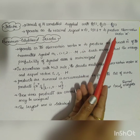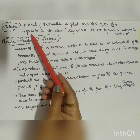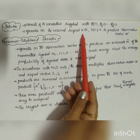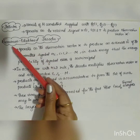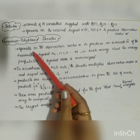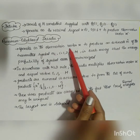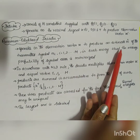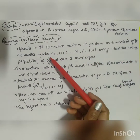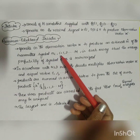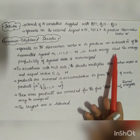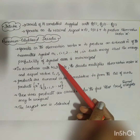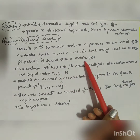The detector consists of m correlators supplied with basis functions φ1(t), φ2(t), up to φn(t), and operates on the received signal x(t) to produce the observation vector. The maximum likelihood decoder operates on the observation vector x to produce an estimate m-cap of the transmitted symbol mi, where i equals 1, 2, up to m, such that the average probability of symbol error is minimized.